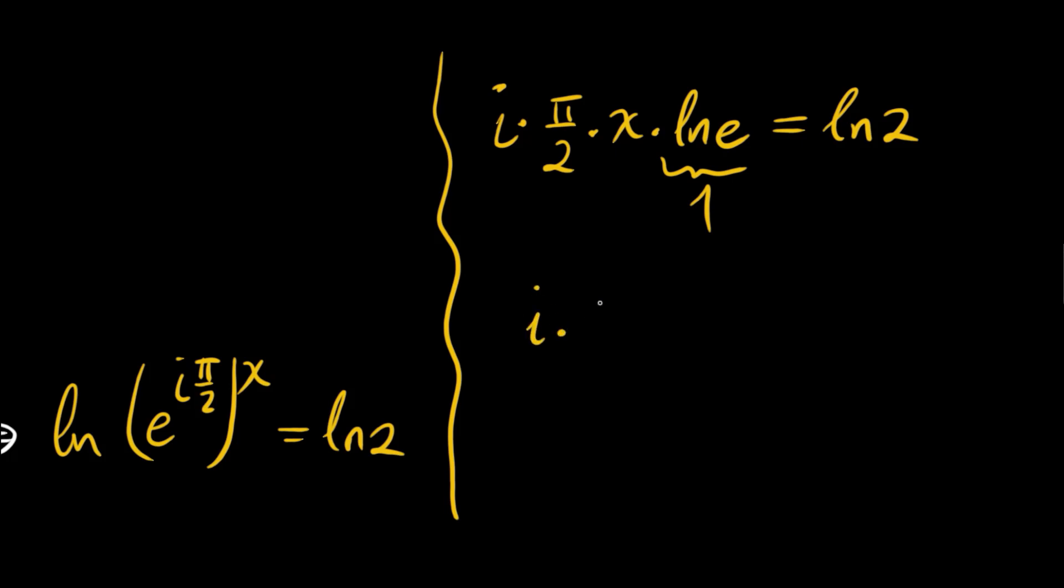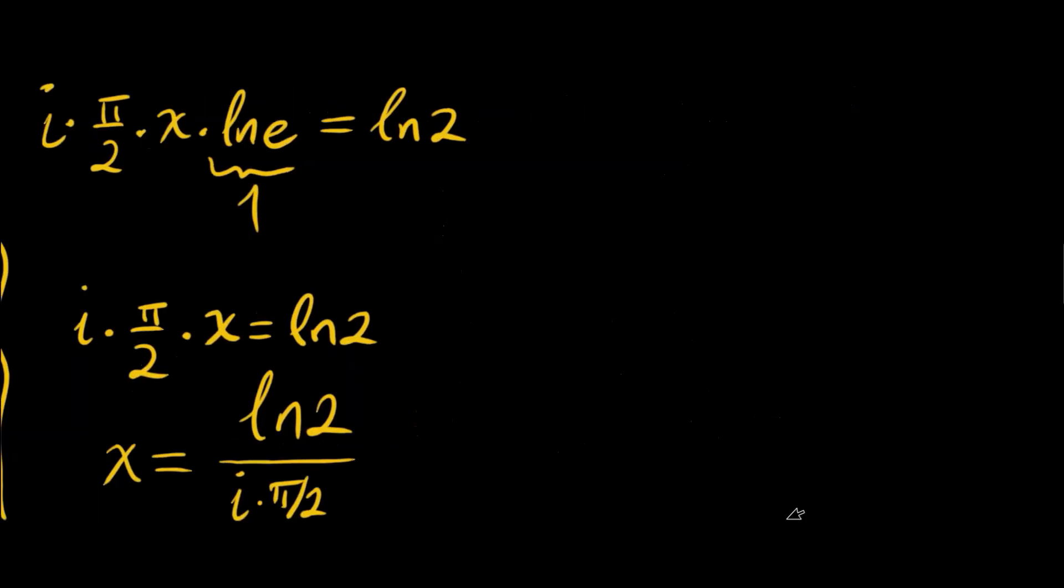So we have i times pi over 2 times x is equal to ln 2. Dividing both sides by i times pi over 2, x is going to be ln 2 divided by i times pi over 2. Or just multiplying by i...